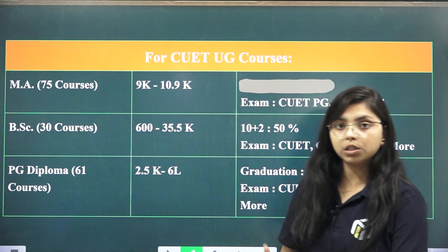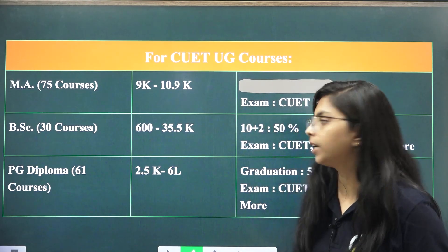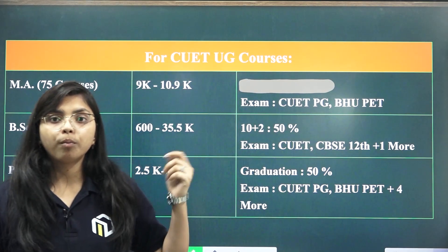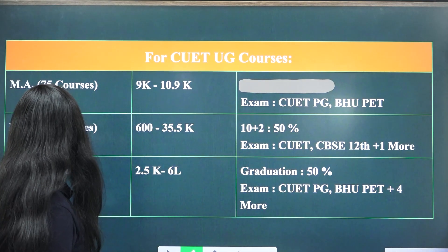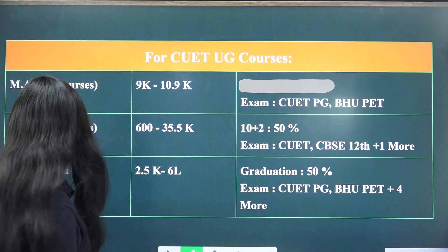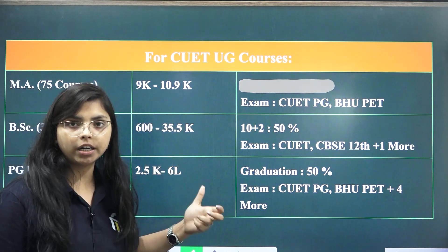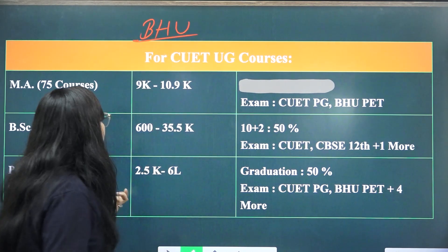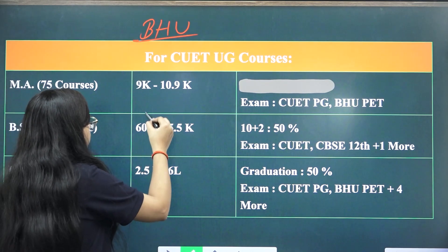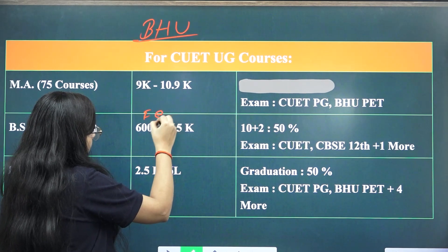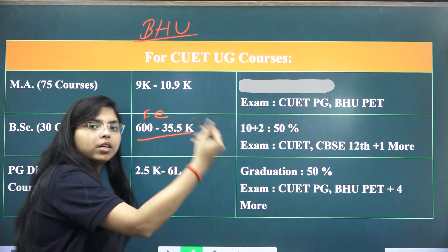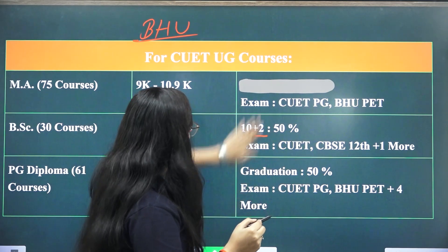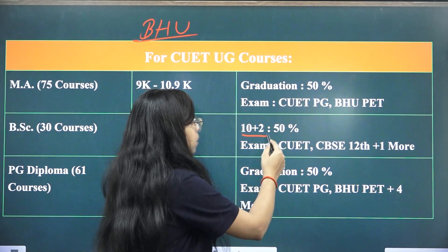Next, regarding courses provided through CUET, BHU offers many programs including BA, BCom, and over 61 courses. The fees structure at BHU is very low, ranging from ₹600 to ₹3500 approximately. The eligibility is 10+2 with 50% marks.